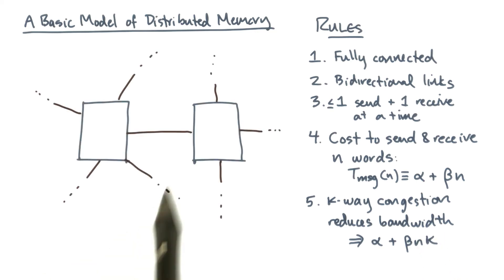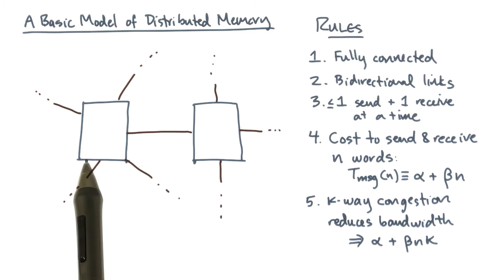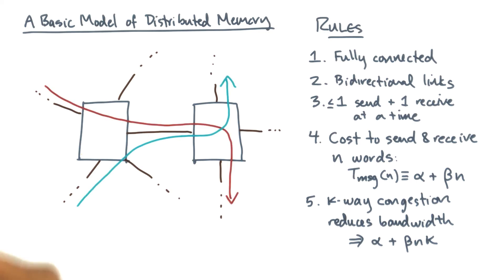For instance, let's consider this link that connects these two nodes. The last rule governs what happens if two messages try to go over the same link simultaneously. So suppose there's a red message going this way and a blue message going this way. The last rule says that the effective cost of this operation is the same as if the data transmission part, which is the beta term, was serialized over the link.